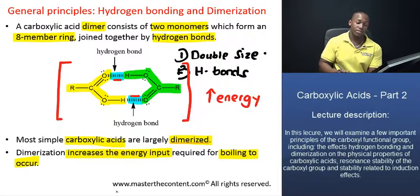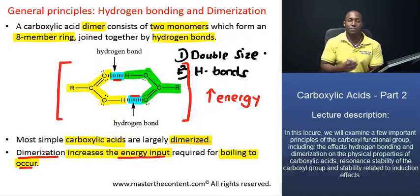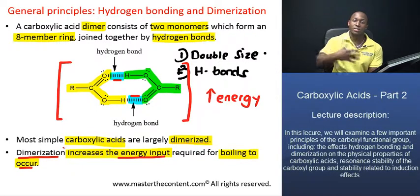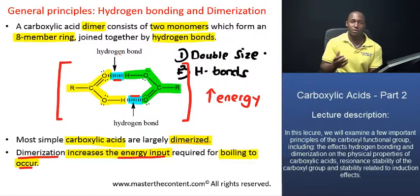Both of those processes will require significant additional input of energy. And for that reason, dimerization will increase the energy that you require for boiling to occur. That is how dimerization affects the physical properties of carboxylic acids — it increases the energy input required for boiling, and for that reason, acids will have higher boiling points than compounds of comparable molecular weight.